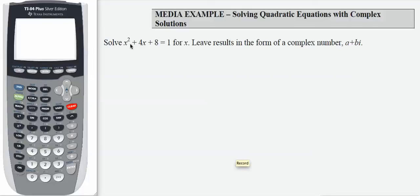We're asked to solve x squared plus 4x plus 8 equals 1 for x and leave our results in the form of a complex number a plus bi. That gives me a hint that I'm probably going to have a complex set of solutions to this quadratic equation.